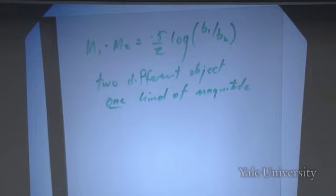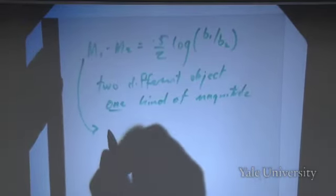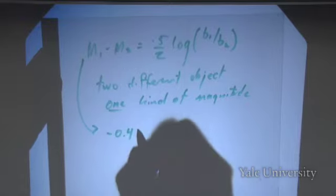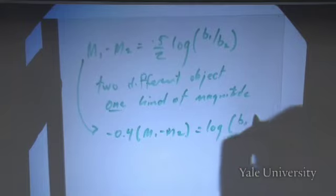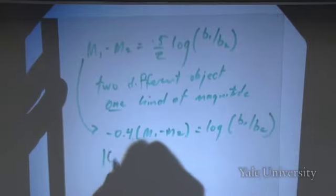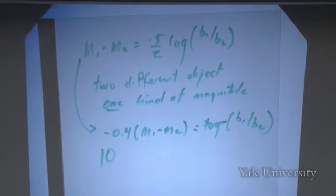On the help sheet on the web, I have this equation in a somewhat different form. Multiply both sides by minus 0.4: this gives minus 0.4 times (M1 minus M2) equals log(B1/B2). Then take 10 to the power of that to get rid of the log. That's the form on the help sheet — it's exactly the same equation, just expressed differently. You can use either form, whichever is more convenient.